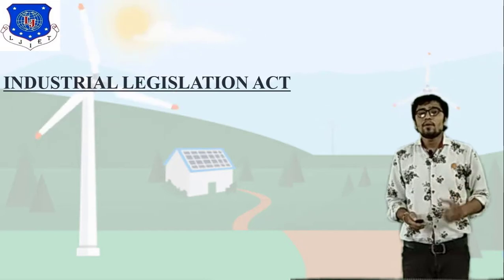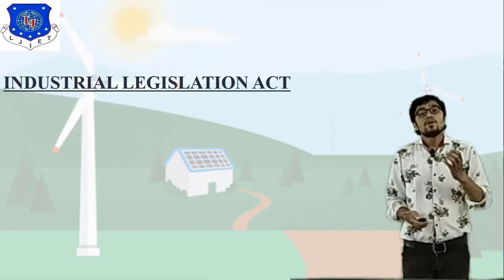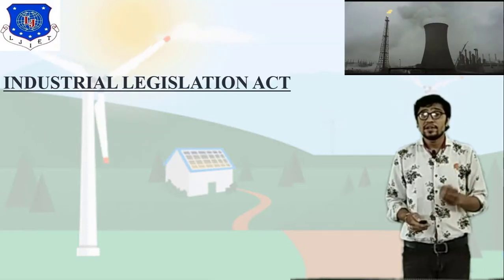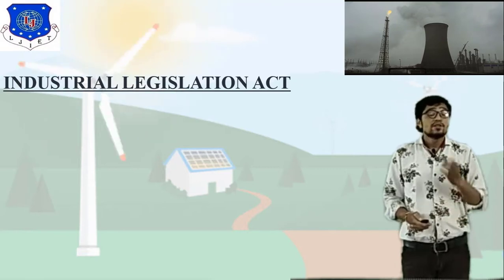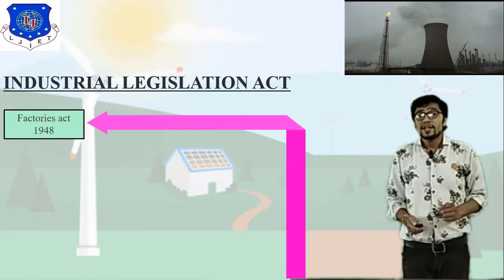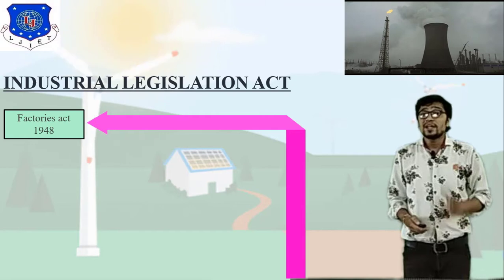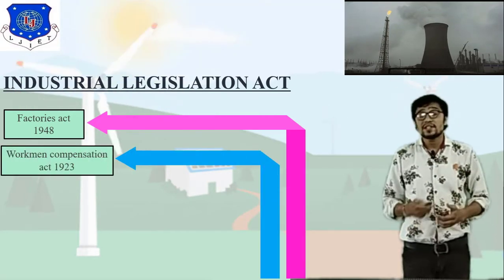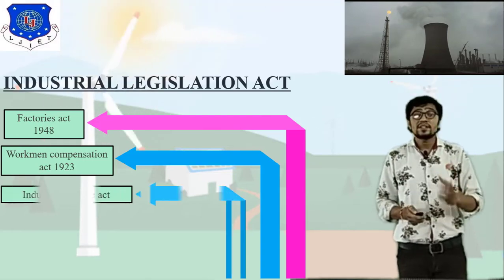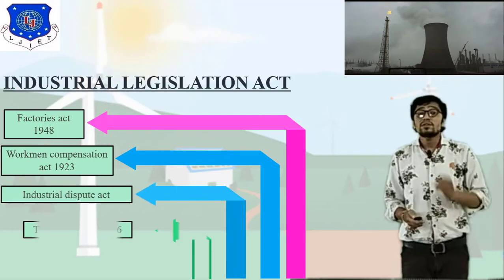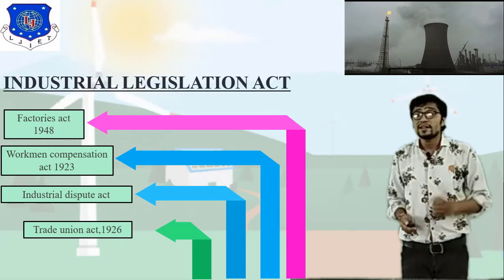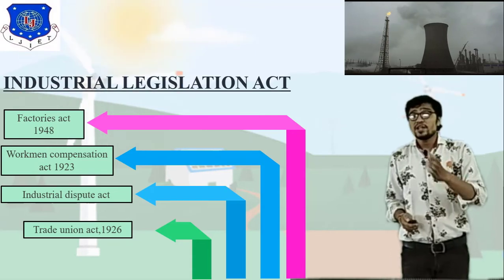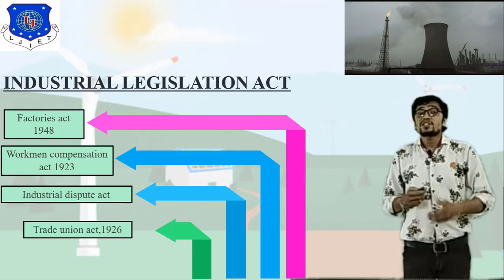Regarding industrial legislation, there are four types of acts. First is the Factories Act 1948, number two is the Workman Compensation Act 1923, number three is the Industrial Dispute Act, and fourth is the Trade Union Act 1926. We have already completed the Factories Act and Industrial Dispute Act, so we will now start the Workman Compensation Act and Trade Union Act.